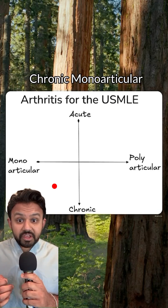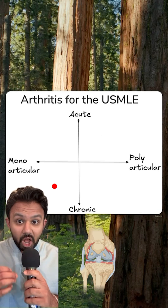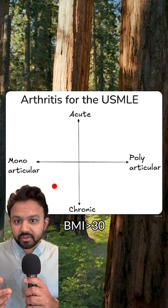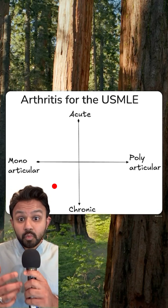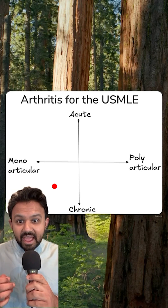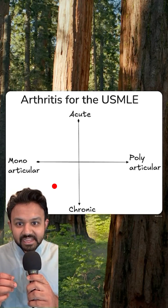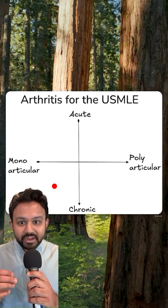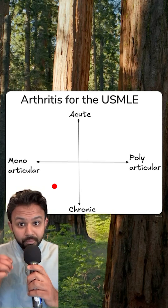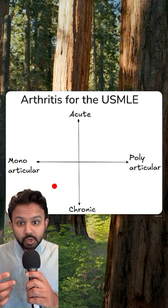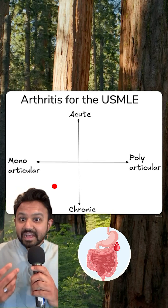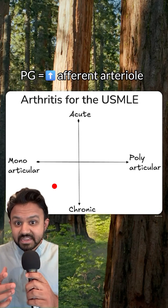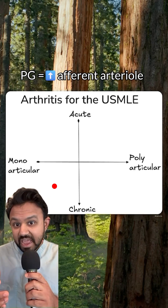With chronic monoarticular arthritis, you should be thinking of osteoarthritis. Watch in the vignette for a BMI greater than 30, joint pain that is worse at the end of the day, and first-line treatment being NSAIDs. The USMLE loves for you to know complications of NSAIDs related to decreased prostaglandins — you can get GI bleeding as well as acute kidney injury, as prostaglandins normally maintain the tone of the afferent arteriole.